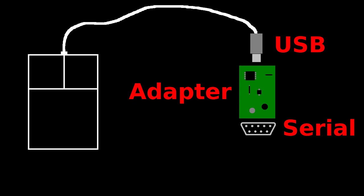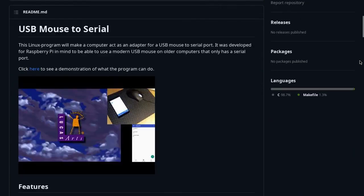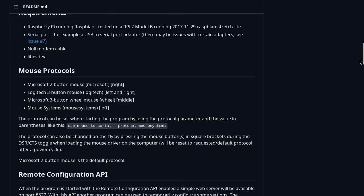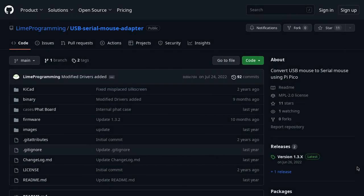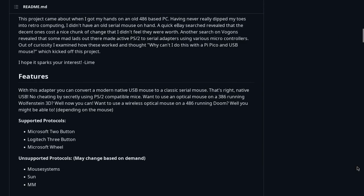There are several open source projects that can do that. The ones I have used myself are the USB mouse to serial project that uses a Raspberry Pi with a USB to serial adapter connected to it, and Calamity Lime's USB serial mouse adapter which is a DIY adapter based on a Raspberry Pi Pico.